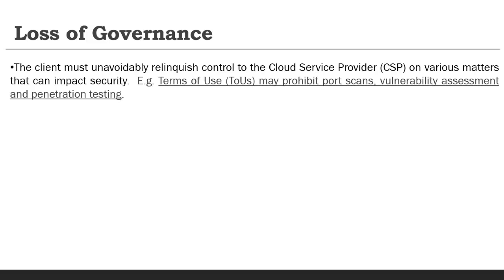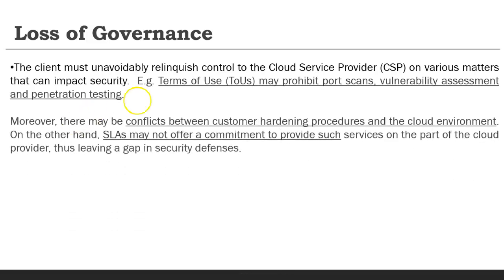Now, even if I am the responsible party, I may not have proper control because the cloud environment is very different. This is the first risk — loss of governance. Even though I am responsible, I have very limited control. My CSP may not provide port scanning, vulnerability assessment, or penetration testing services because those are prohibited in shared cloud environments. There may be a conflict between my hardening process and the cloud's general hardening, since cloud environments are general products available to everyone. SLA commitments ensure services are up and running but do not guarantee security of my data or applications.